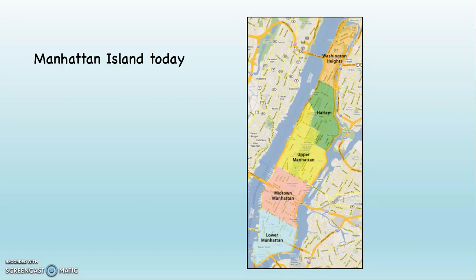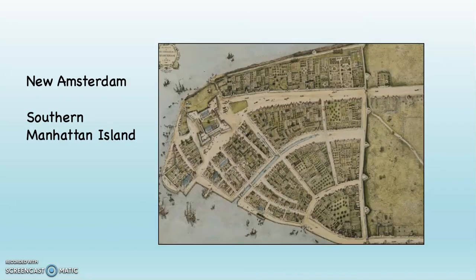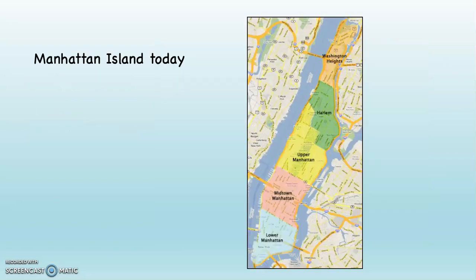This is Manhattan today. If you look where it says lower Manhattan down at the bottom, that is where New Amsterdam was. There's nothing really left of New Amsterdam — the old buildings have all been torn down and rebuilt. But you can see lower Manhattan, then midtown Manhattan, upper Manhattan, Harlem, and then Washington Heights.